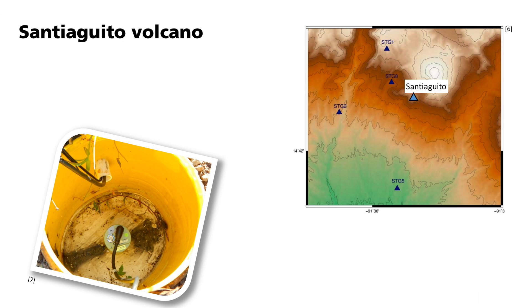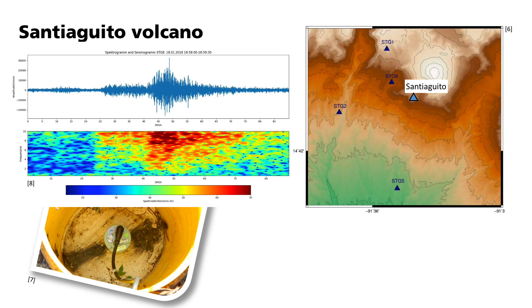Here you can see the recording of a tectonic, that means a non-volcanic, earthquake about 100 kilometers away by the vertical component of station STG8. Under the seismogram, the corresponding frequency spectrum is shown. Here you can clearly see the onset of the P wave. It can be recognized as very abrupt with frequencies between 2 and 10 Hz. About 15 seconds later, the higher amplitude S wave follow with a similar frequency range.